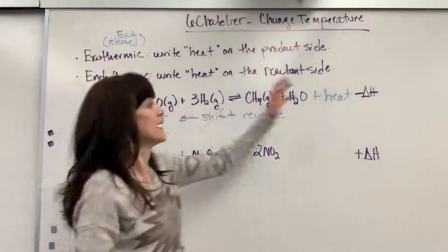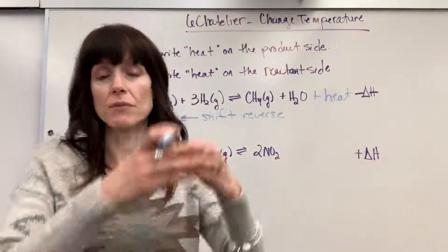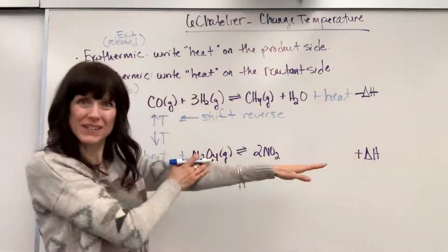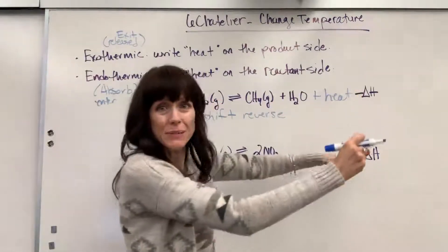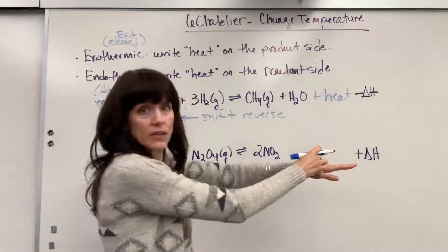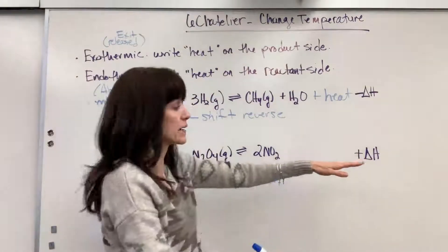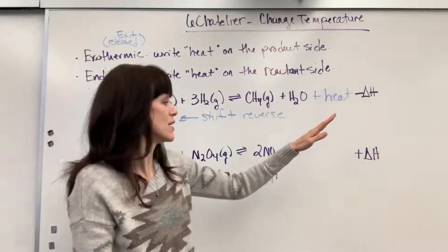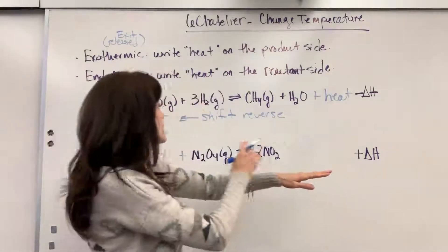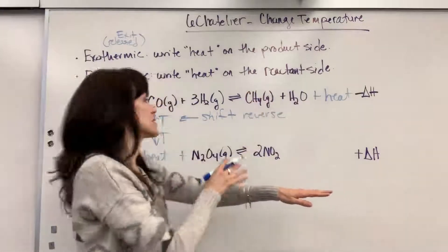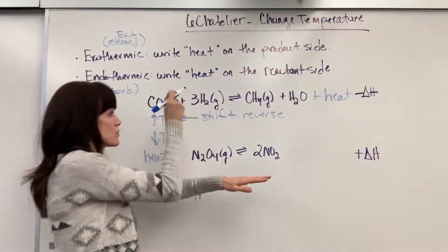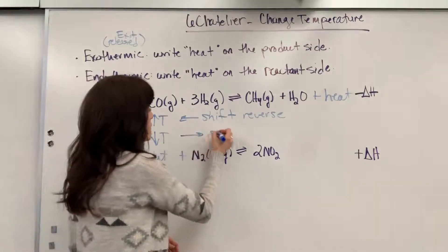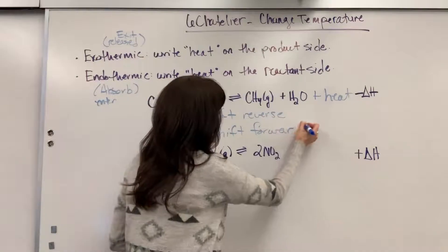For an exothermic reaction, let's say we decrease the temperature — put the reaction in an ice bath and cool it down, pulling some heat out. It's like the child jumping off the teeter-totter; this side gets lighter. We're out of balance, so it's got to go back into equilibrium. We're going to shift in the forward direction — consume reactants, produce more products. So it will shift toward the products, shift forward.